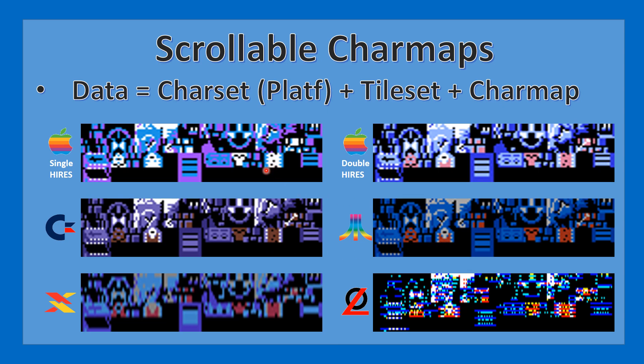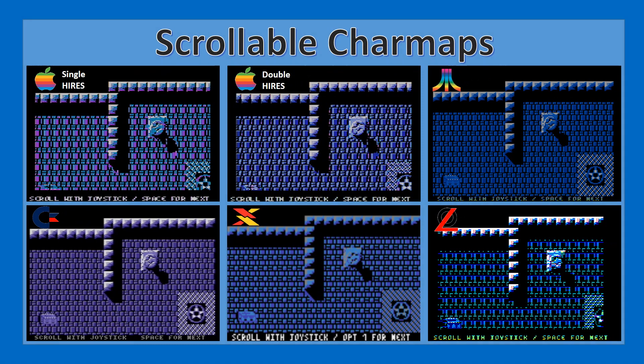This includes the Atari, the Apple in single or double high resolution mode, as well as the Lynx and the Auric. The Lynx and the Auric have one extra step where you also have to change the resolution of the character set. Once that's done, that's it — you can just run the same code to render your scrollable map. I've included in the demo disk a new section on character maps where in just 10 to 15 lines of code you load the map, the tiles, the character set, and then use the joystick to scroll around the map.